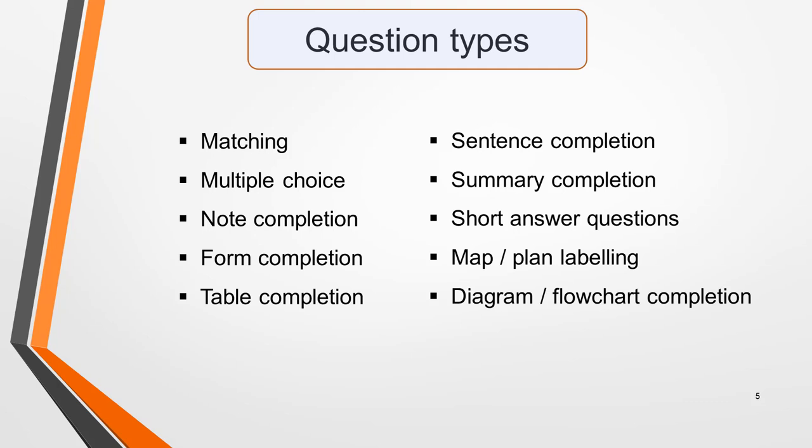Most types could appear in any of the four sections of the test. You must be able to quickly identify what type of questions you're required to answer. Sometimes the introduction will tell you, or it will be obvious, such as a plan or map that requires labels.